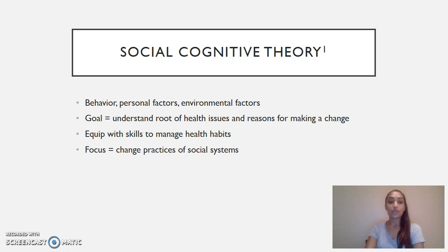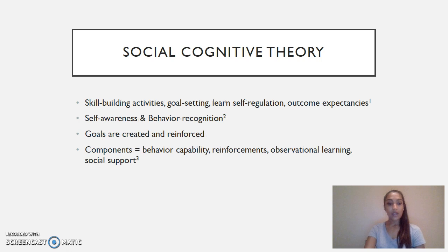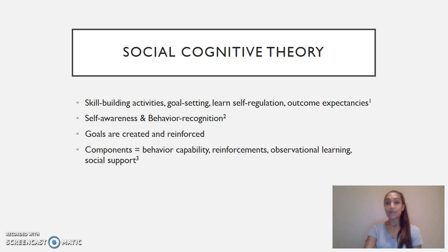Changing the practices of social systems which have a negative effect on health is the main focus, rather than only focusing on changing the habits of individuals or clients. Through methods such as skill-building activities, goal-setting, learning self-regulation, and outcome expectancies, clients can learn and build healthier habits. These clients can become more self-aware and recognize their behavior, which is the first step to making a change. Goals are created and reinforced, which is what causes a theory of change to work, so clients come up with their own goals to use as motivation to really make a behavior change.